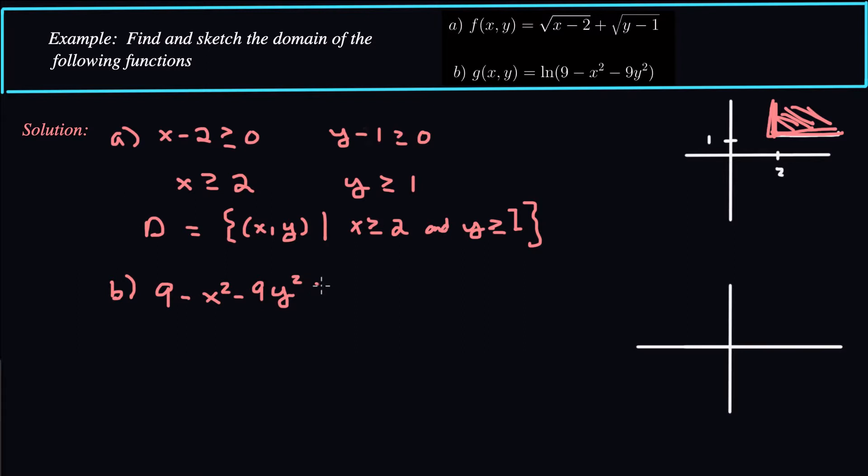squared needs to be greater than zero because log, natural log, any log, is only defined for positive values. So if that's the case, then we have x squared plus 9y squared is going to be less than 9.